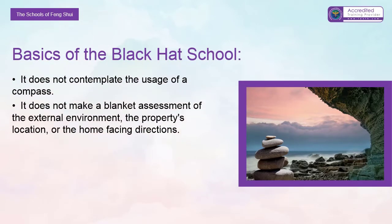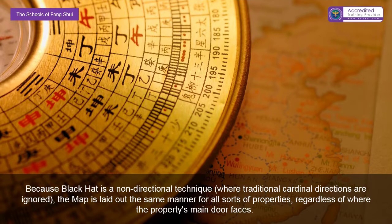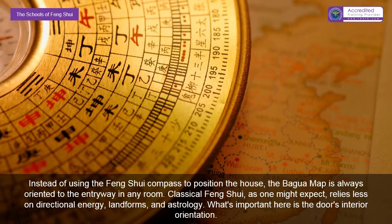Basics of the black hat school: it does not contemplate the usage of a compass and does not make a blanket assessment of the external environment, the property's location, or the home's facing directions. Black hat uses the bagua — known also as an energy map or the bagua grid — to divide a building into eight life aspirations or stations, in an attempt to simplify the complex laws of traditional Chinese feng shui. It's also common to see the bagua, which means eight trigrams, broken into nine sections. Because black hat is a non-directional technique where traditional cardinal directions are ignored, the map is laid out the same way for all sorts of properties regardless of where the property's main door faces. Instead of using the feng shui compass to position the house, the bagua map is always orientated to the entryway into any room.